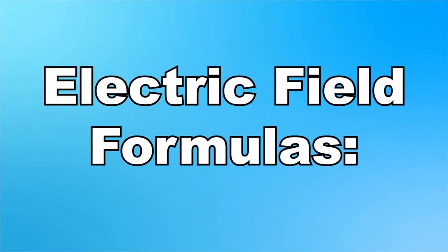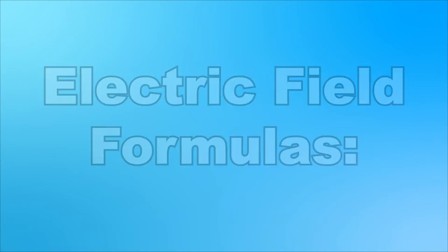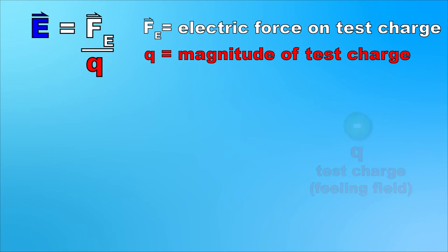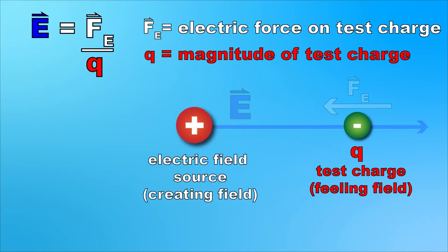We have three different formulas to mathematically describe electric fields. The first one is electric field strength equals the electric force divided by charge, and it tells us that the electric field acting on a test charge, q, is based on the electric force acting on that test charge. It's important to remember that this charge, q, is the charge of the test charge, the object sort of feeling the electric field. This isn't the charge of the source, which is creating the electric field.